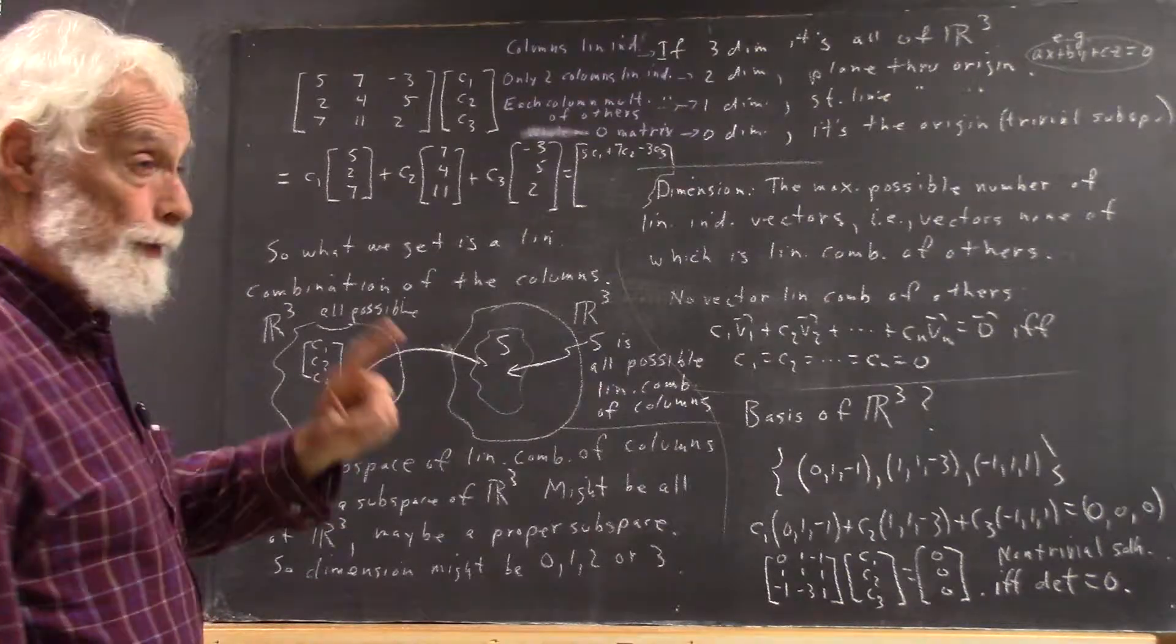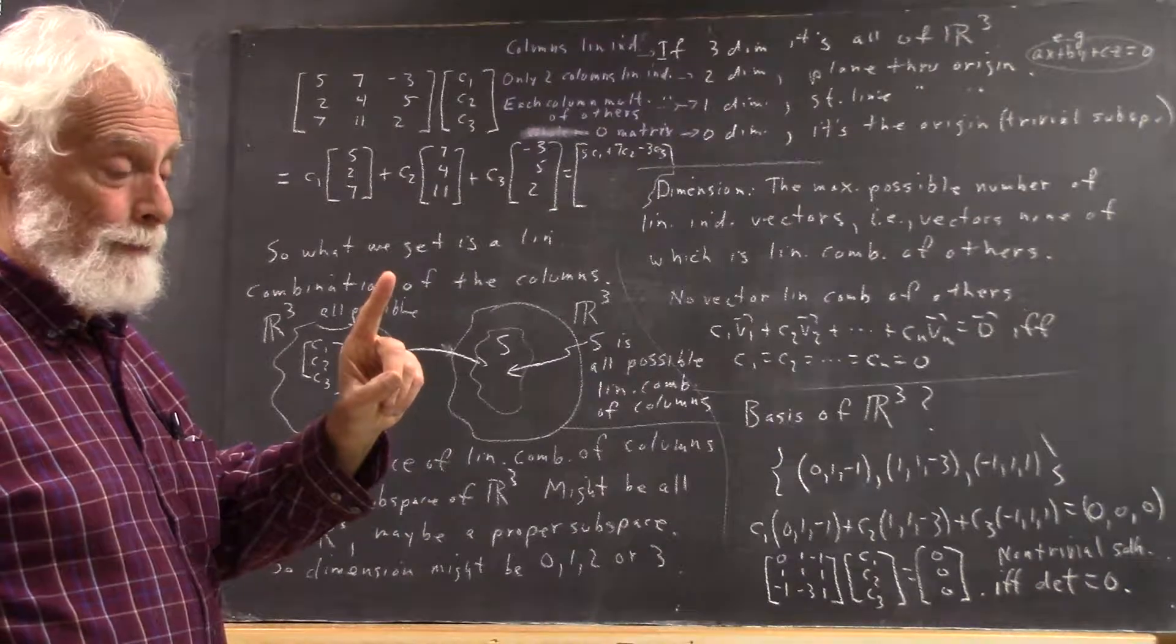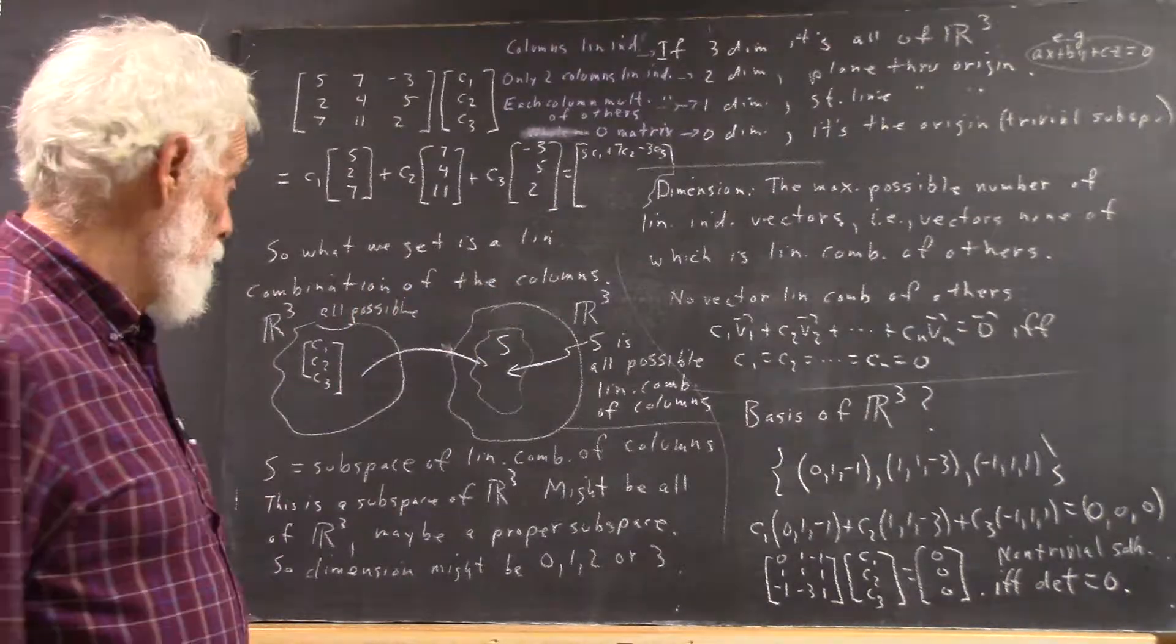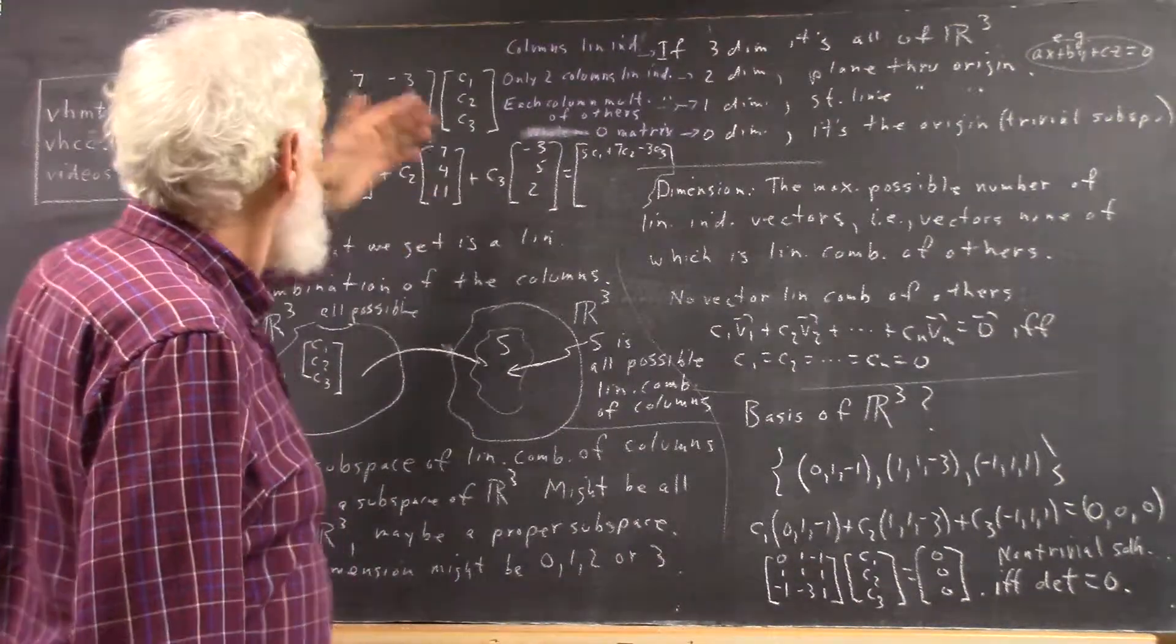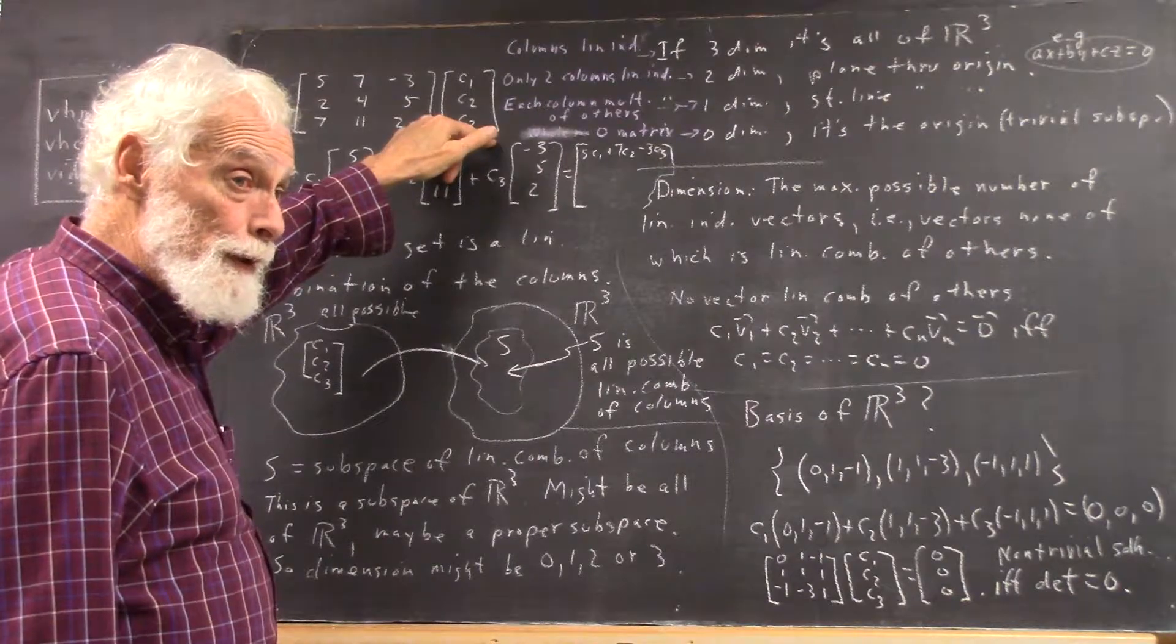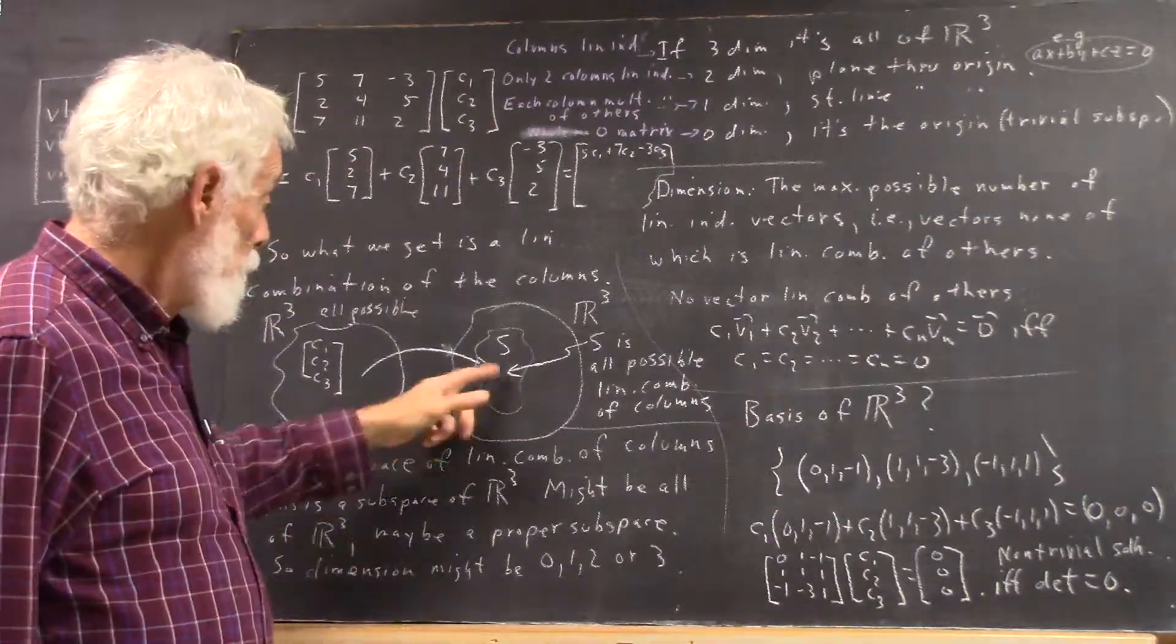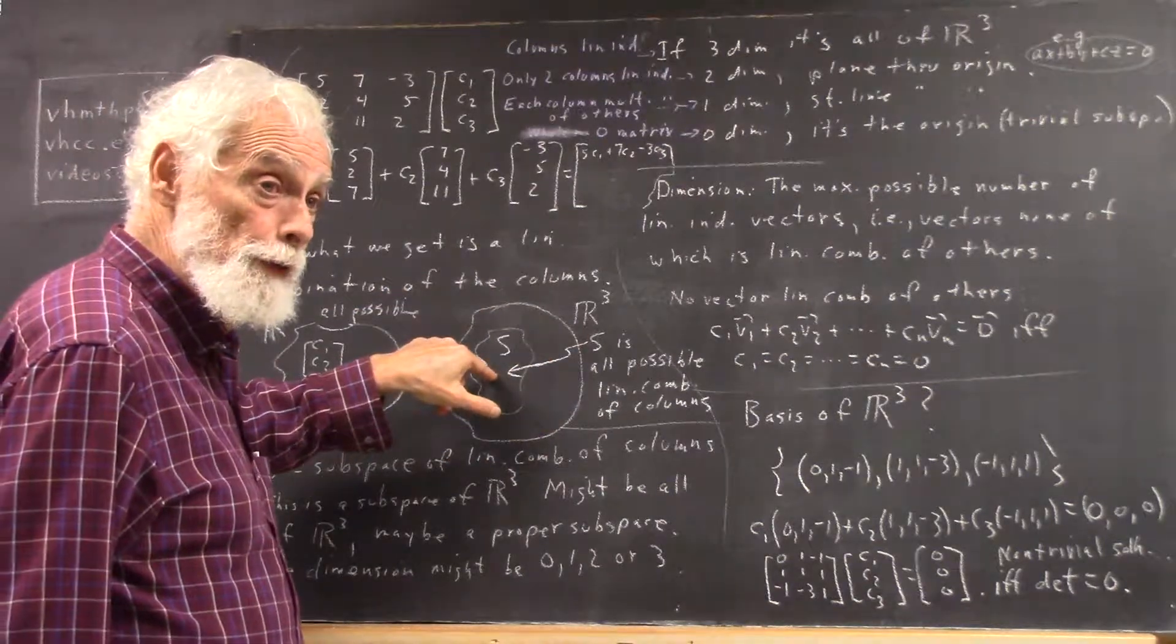Now, if you have just one linearly independent column, if all the columns are linearly dependent on the others, then what you get if you take all possible points at R3 and multiply this matrix by them is just going to be a line through the origin over here. So this subspace of R3 is just going to be a line through the origin.